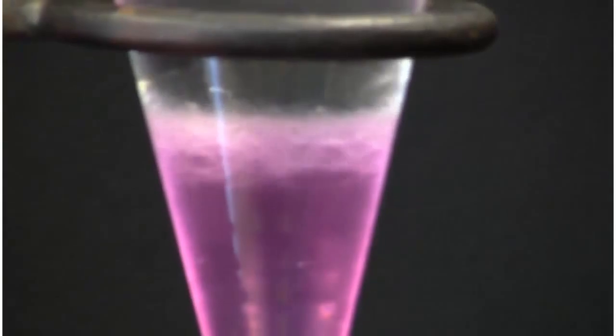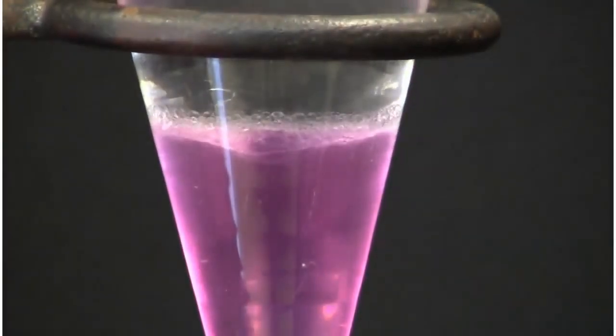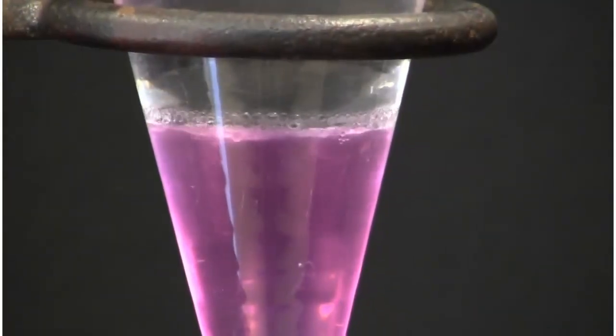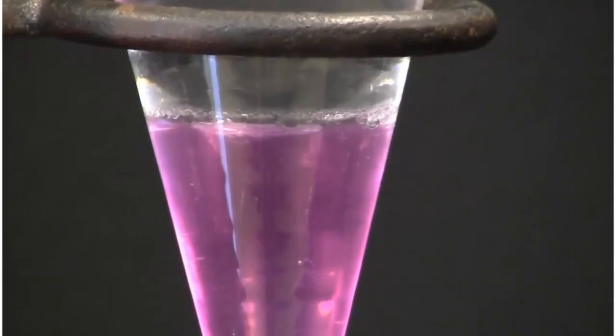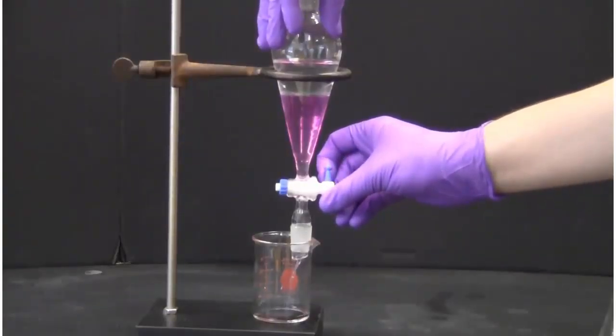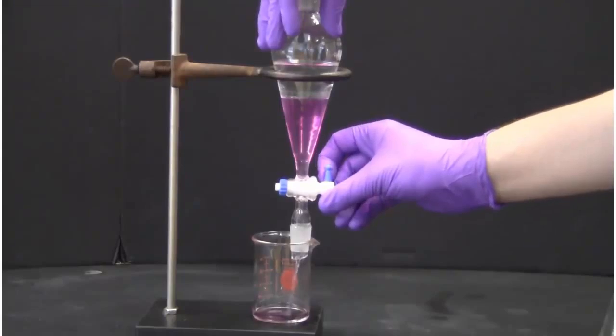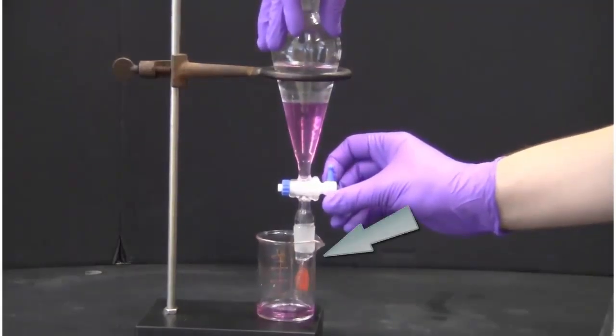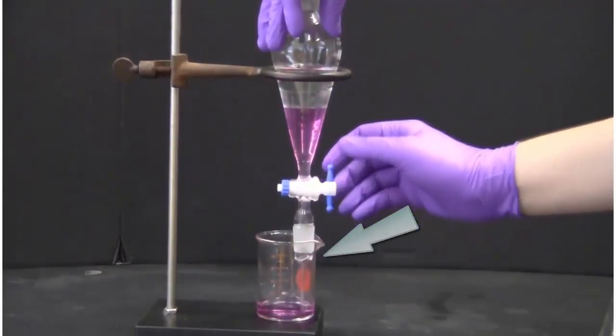Once the contents in the funnel have settled you will see two layers form. Wait until the two layers are completely separated then transfer the lower layer into a beaker or Erlenmeyer flask by slowly opening the stopcock. Placing the end of the glass tube on the side of the flask or beaker helps avoid splashing.